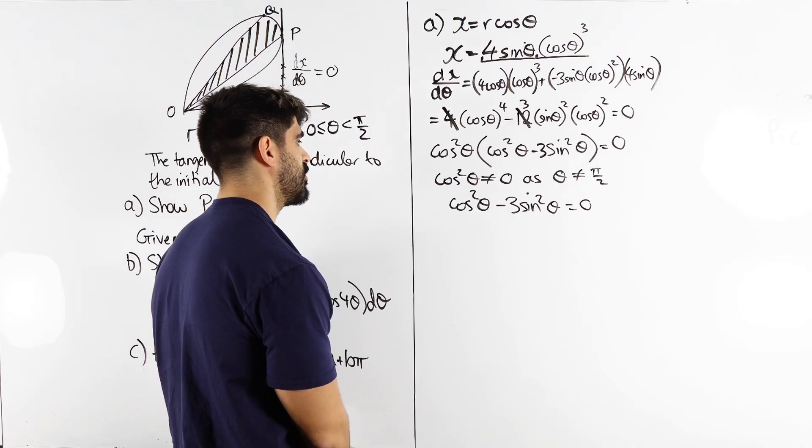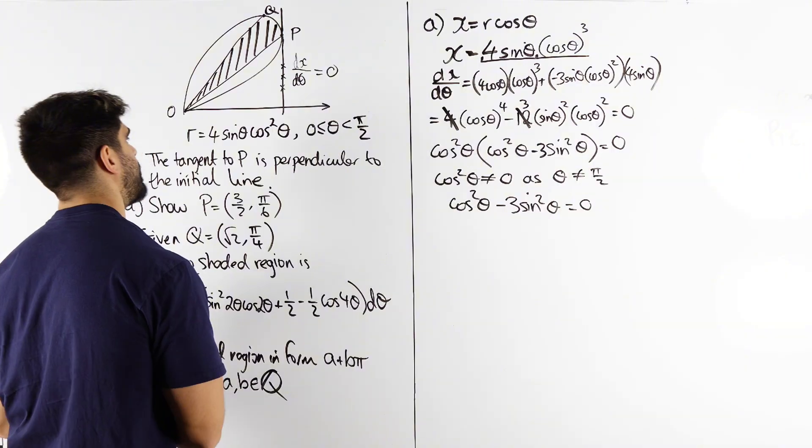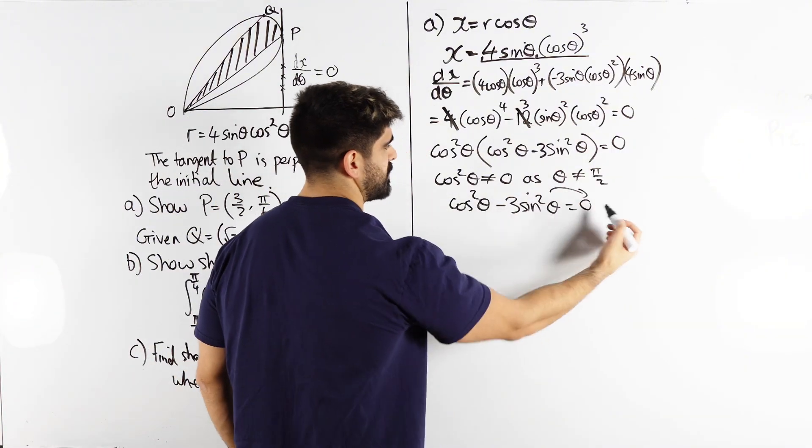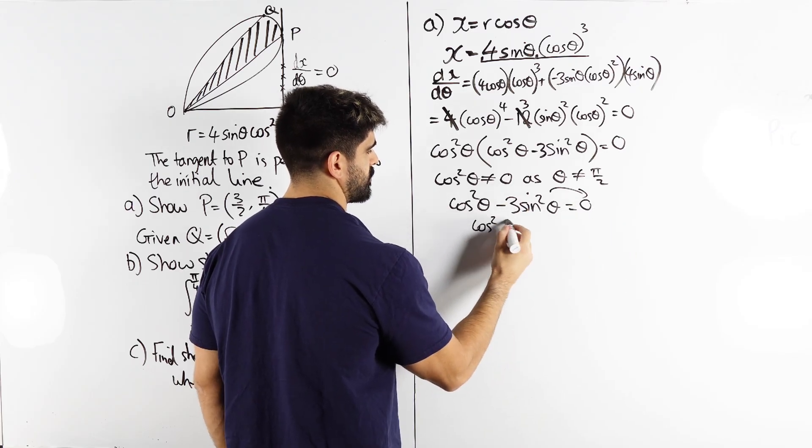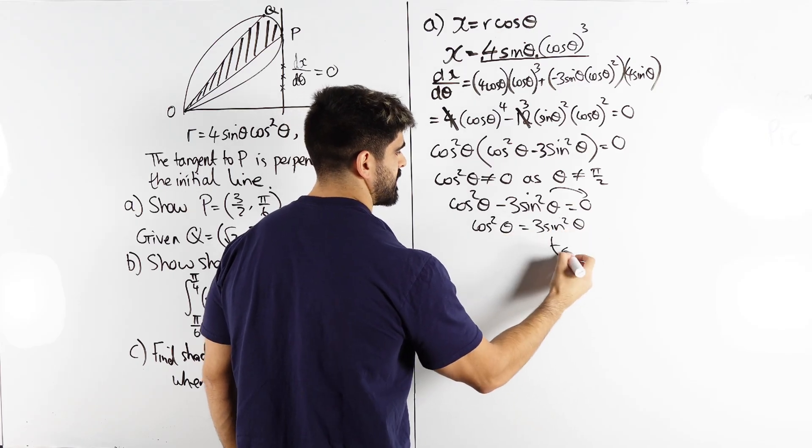And the best way to do this, I mean you could convert everything into one function. I'm personally thinking to change that into tan. So if you move that here to three sine squared. So we get cos squared theta is three sine squared. Divide by cos so we get tan squared is divided by three one third.